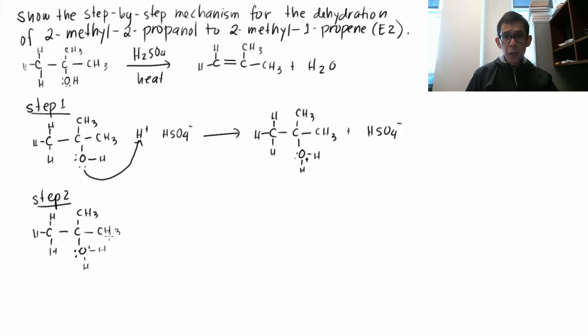So then what happens is that lone pair oxygen is very unhappy being positively charged. So that lone pair goes to oxygen as a second lone pair. And so this is what you get, CH3. Oh, no, let's spell out those Hs.